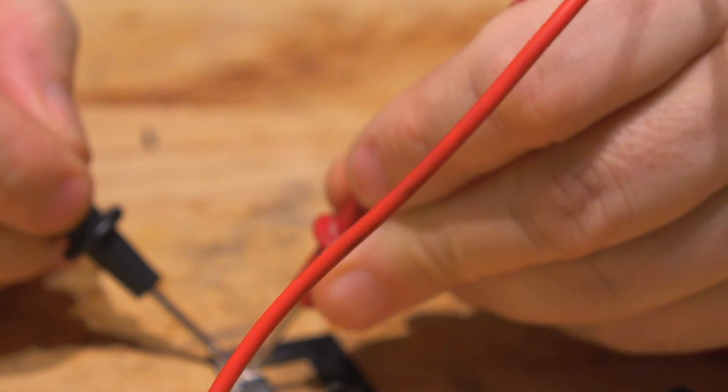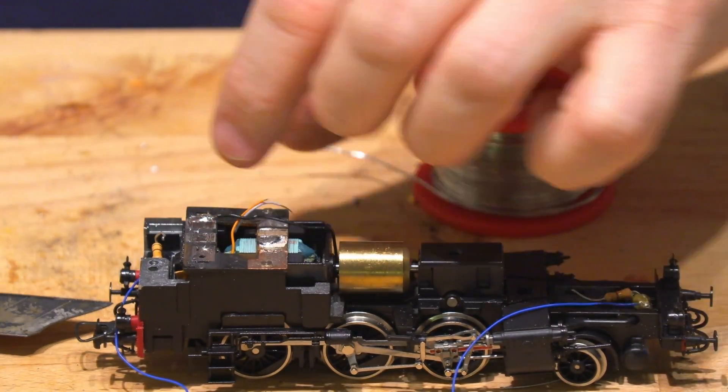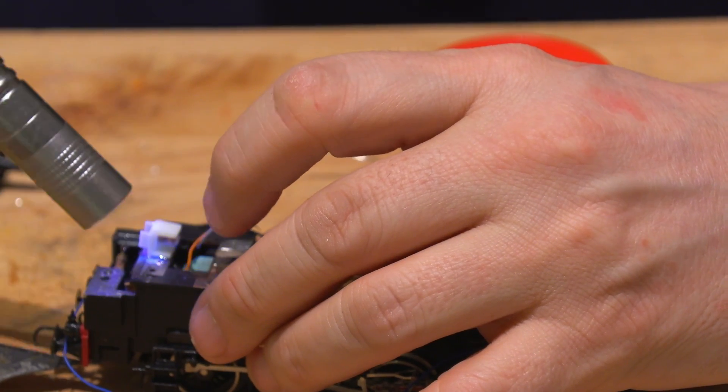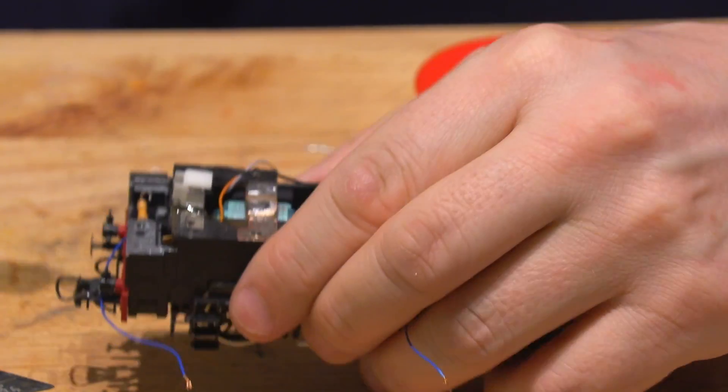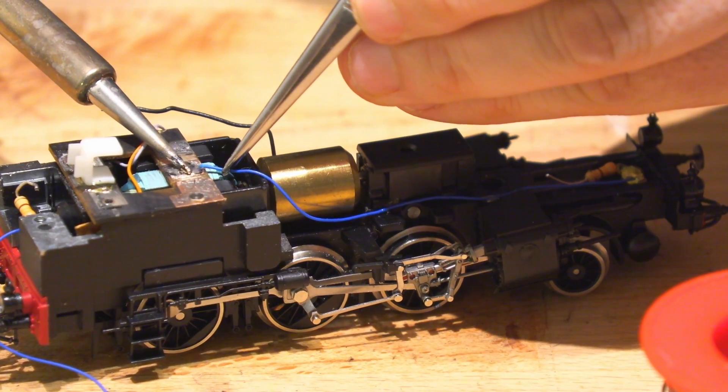For the decoder we use a Lockpilot 5 Micro from ESU. The author of the tutorial suggests using sheet metal to make a decoder mount. As we don't have any, we used a 3D printer to make one. Then we glued it in place with bondic and mounted the decoder on it.